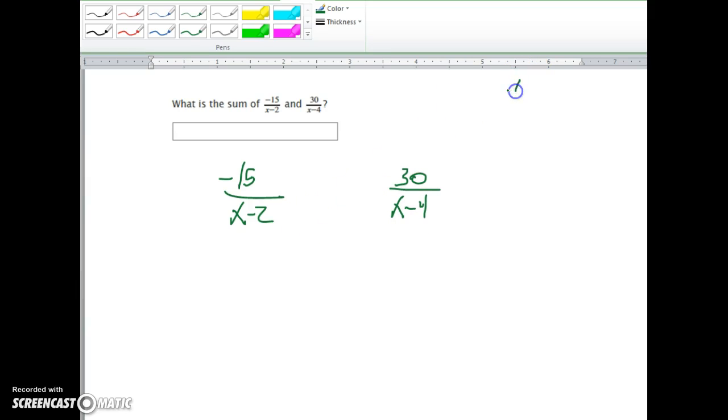If we had 1/2 plus 2/3, since neither one of these can be changed into the other easily, we would multiply this by 3/3 and multiply this by 2/2, so that we would get denominators of 6 in both cases.